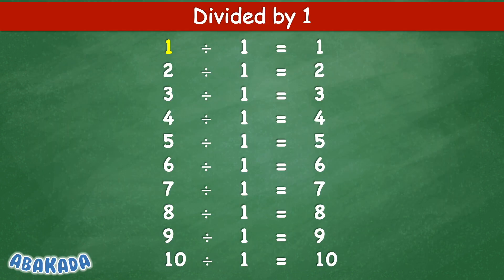Divided by 1: 1 divided by 1 equal 1, 2 divided by 1 equal 2, 3 divided by 1 equal 3, 4 divided by 1 equal 4, 5 divided by 1 equal 5, 6 divided by 1 equal 6, 7 divided by 1 equal 7, 8 divided by 1 equal 8, 9 divided by 1 equal 9, 10 divided by 1 equal 10.